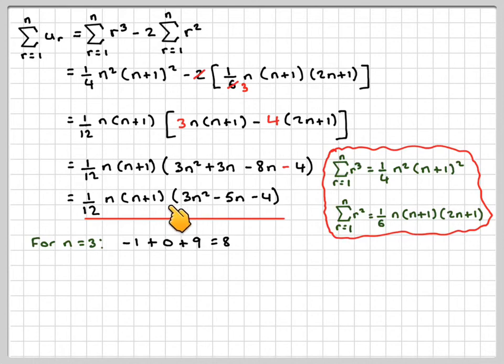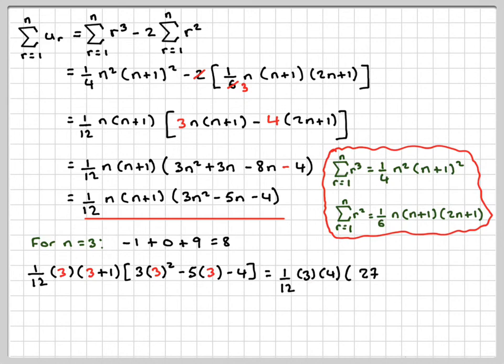If we put n equals 3 into here, hopefully we'll get 8. So 1 twelfth of 3, (3 plus 1), 3 times 3 squared, minus 5 times 3, minus 4. That gives me 1 twelfth times 3, times 4. 3 squared is 9, 9 times 3 is 27, minus 5 times 3 is minus 15, minus 4. The 12 and the 3s will cancel out, and then if we do 27 minus 15, minus 4 will give me 8.